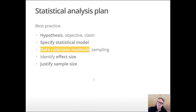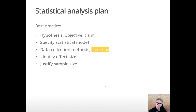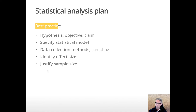Then we identify data collection methods formally. We may already have an idea of the experiment we'd like to conduct, but once we identify that statistical model, we figure out what data we're going to collect and aspects of the sampling as well. These last two steps are not always practiced but are essential elements of best practice. A lot of people would agree with the dramatic statement that if you're not doing these last two steps, you're not doing reproducible science.